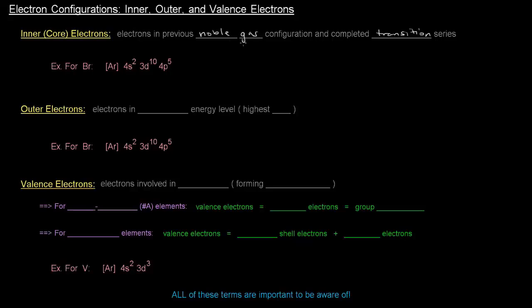So what are the electrons in the previous noble gas configuration and completed transition series? That's basically going to be all of the electrons that make up right there. That's everything in the previous noble gas configuration and any completed transition series.